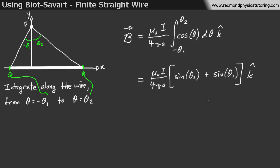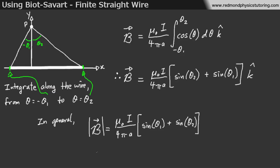In general, you can find the magnitude for a finite segment of wire, presuming that you can calculate these angles, and you usually can. It's just a matter of drawing it big enough that you can see them. And then you get the magnitude of the magnetic field B is equal to mu naught i over 4 pi a times sine of theta 1 plus sine of theta 2, and then you would get the direction from the right-hand rule.